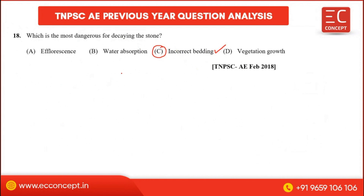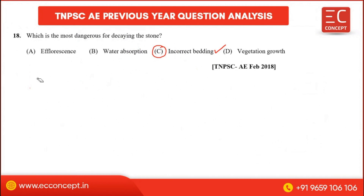Incorrect bedding is the most dangerous factor for stone decay. When stones are not placed on their natural bed correctly, the internal layers are exposed to crushing stress differently, leading to decay. If a stone is laid incorrectly, it affects the stone's crushing strength and leads to deterioration.